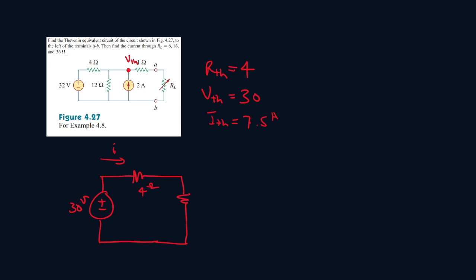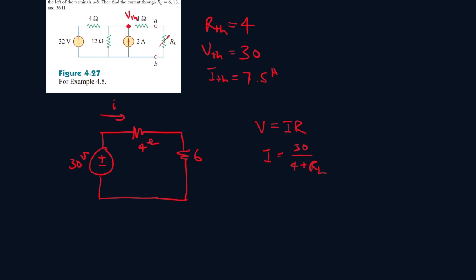When the resistor load is 6. So you know V equals IR. So I will be 30 over 4 plus the resistor load. So when RL is 6. 30 divided by 6 plus 4. That's 3.